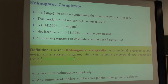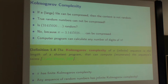And if a file can be compressed, then you know there is some structure, but still there may be some randomness. And now we come to Kolmogorov complexity. Kolmogorov complexity is also about compression — it's actually a kind of infinite compression.